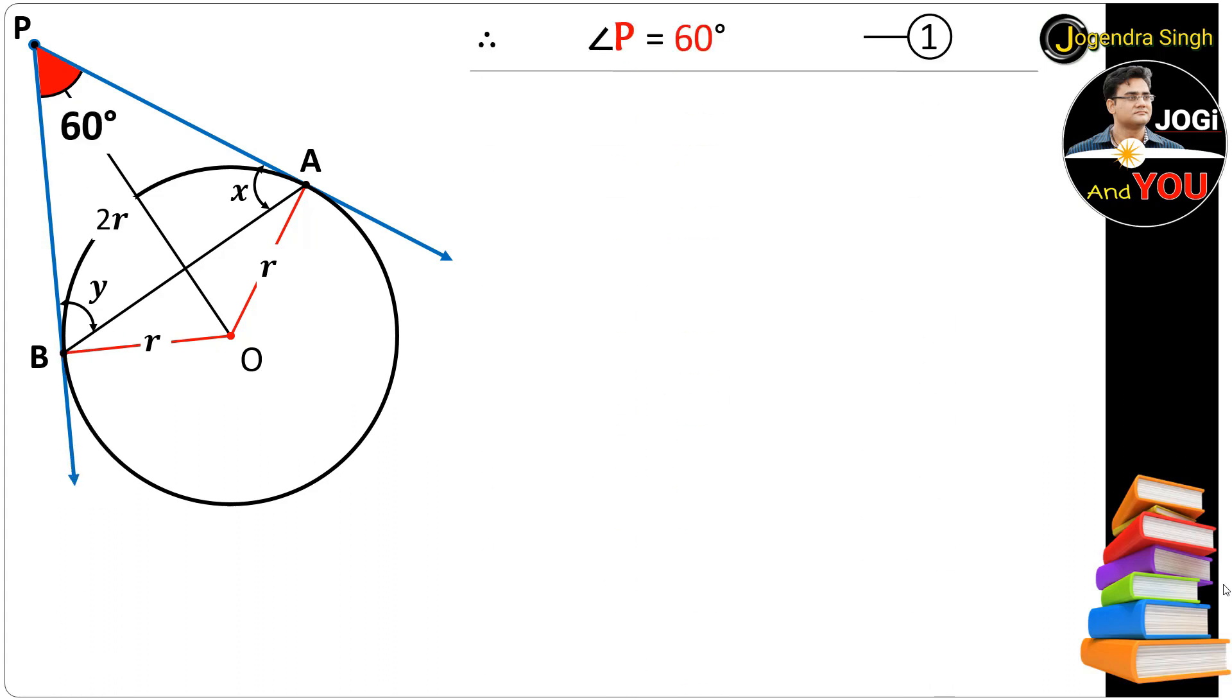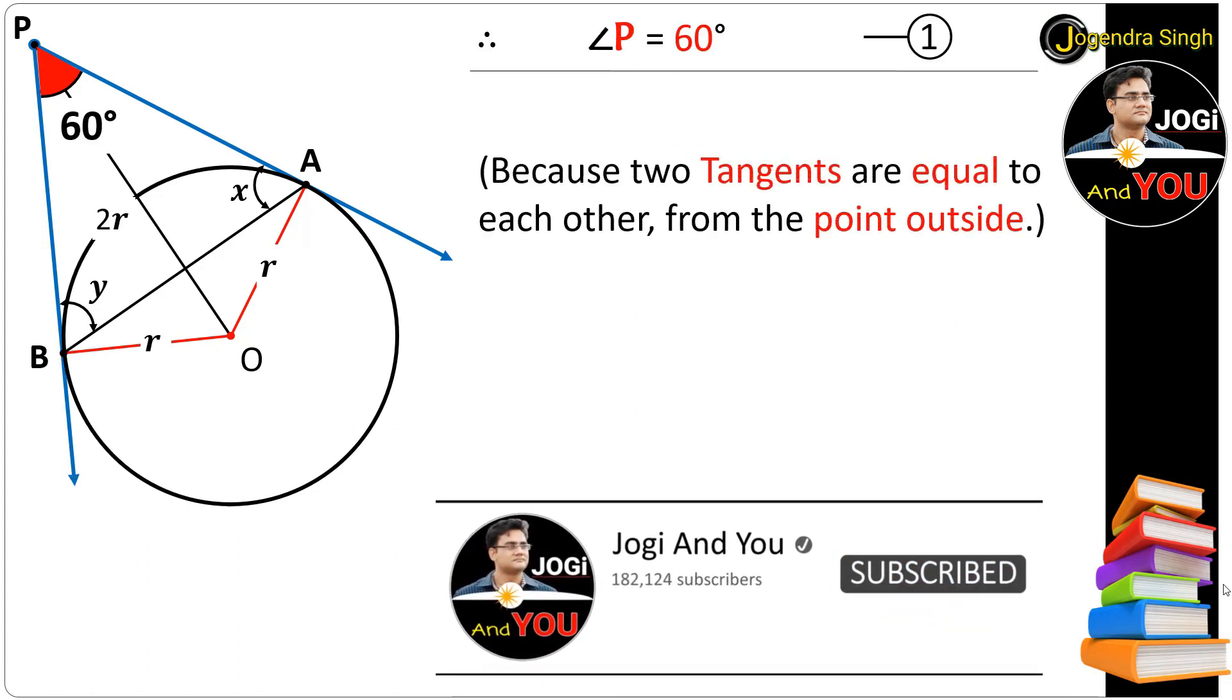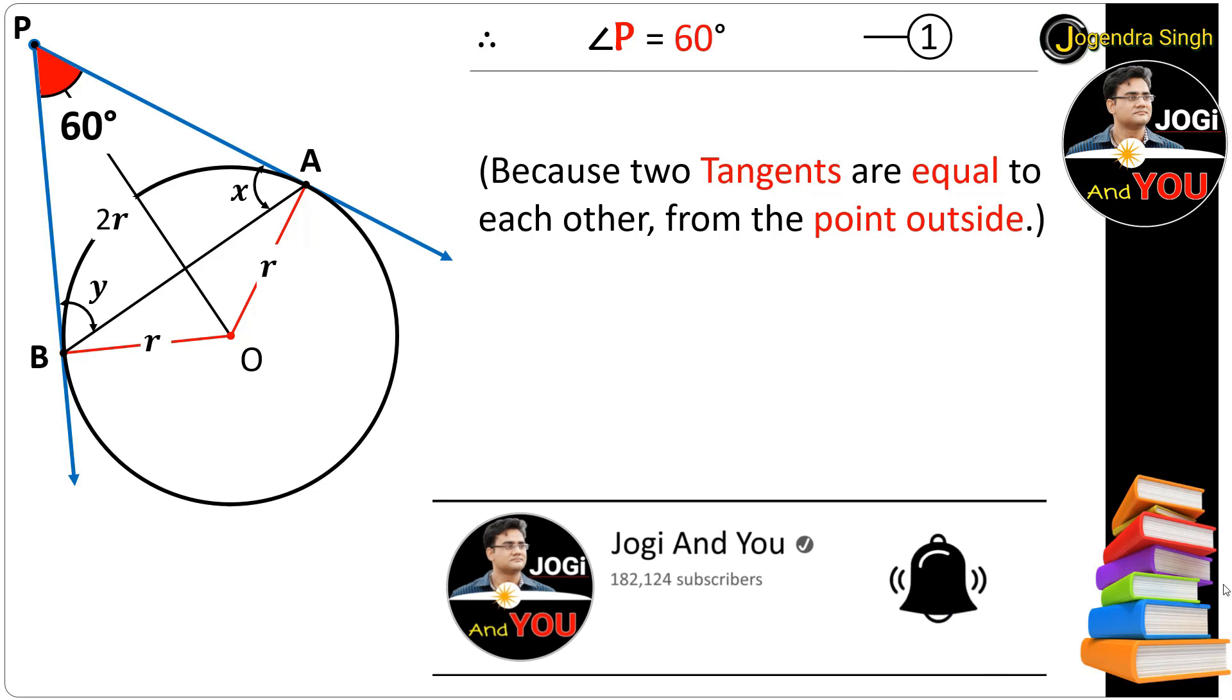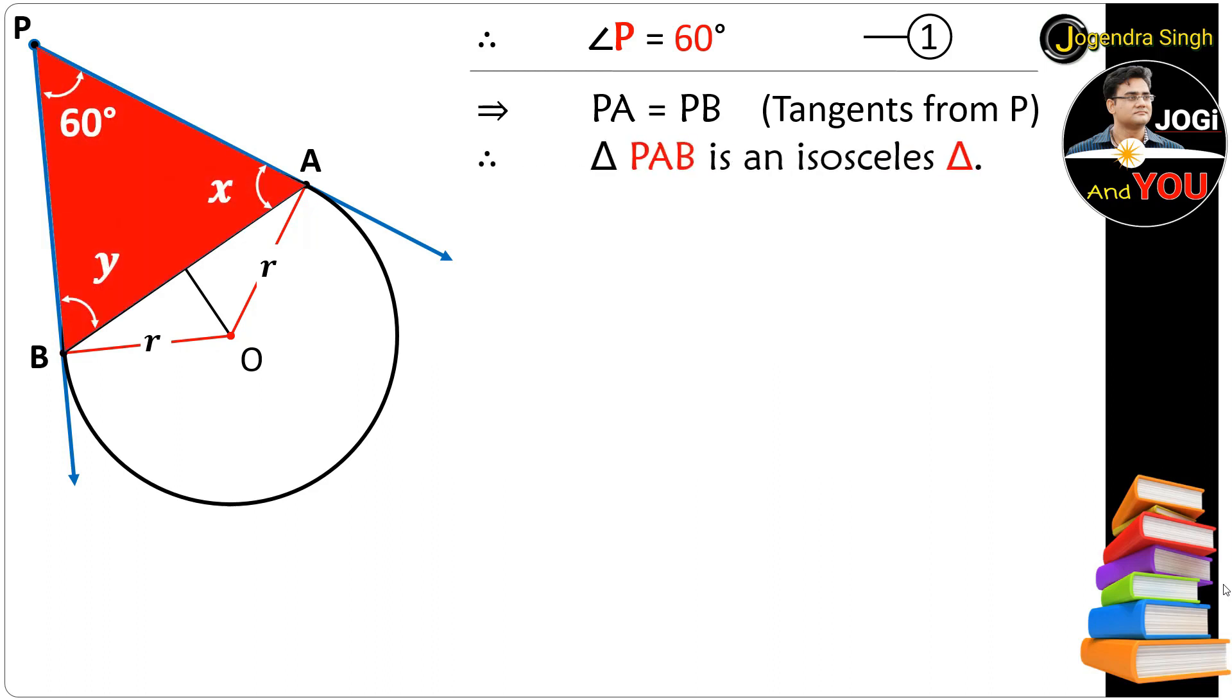Put it up here. Now, because two tangents are equal to each other from the point outside, PA is equal to PB. And with two equal sides, this triangle is an isosceles triangle. And because angles opposite to equal sides are equal in a triangle, x is equal to y.